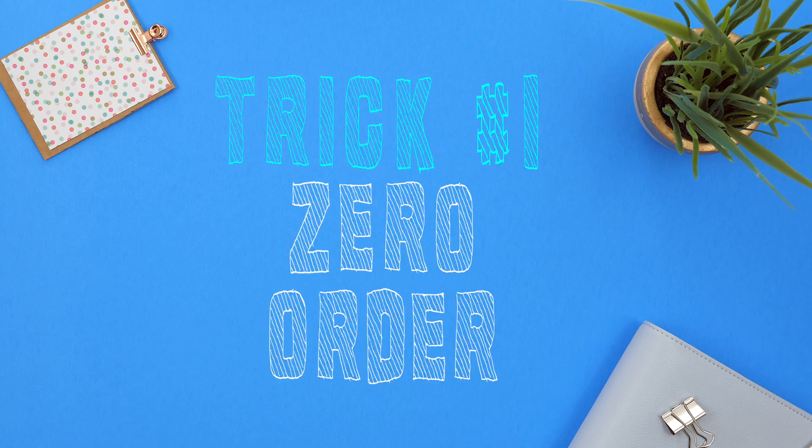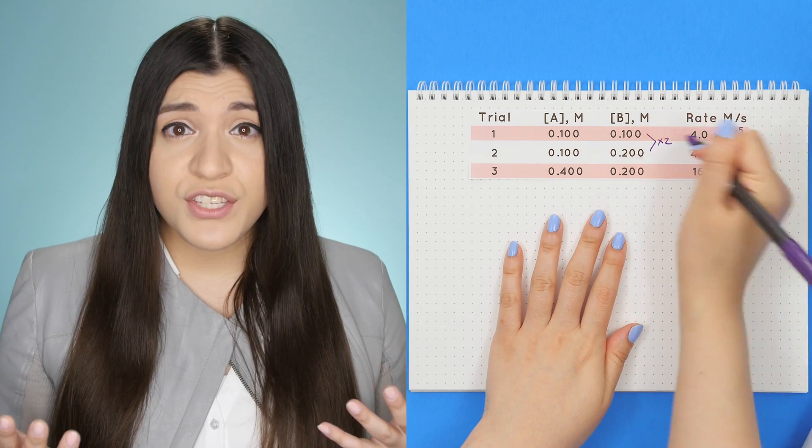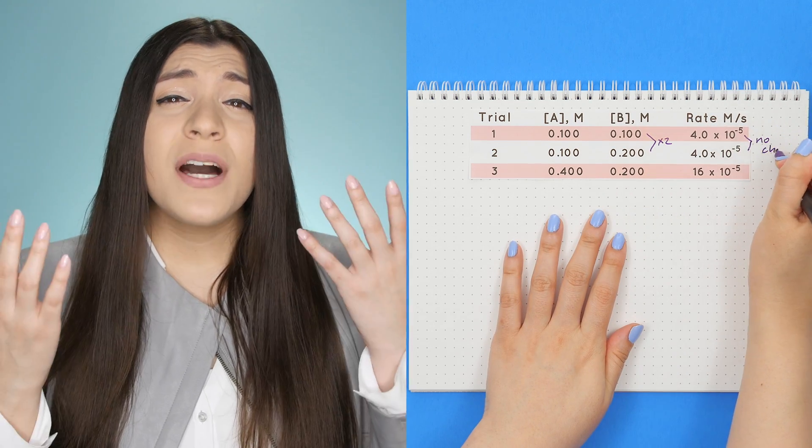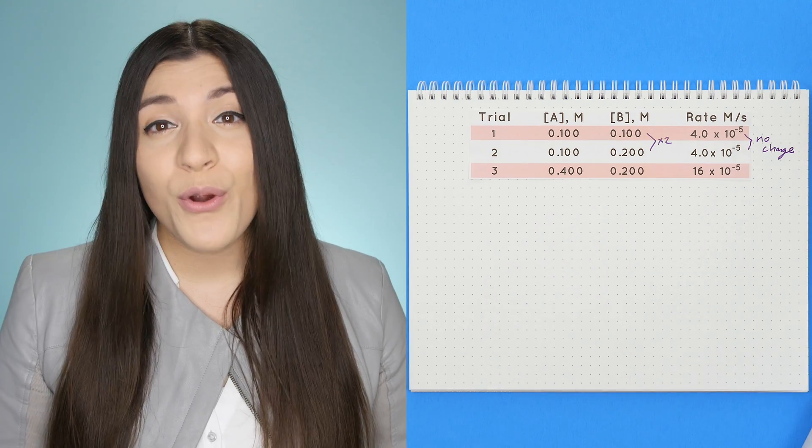Trick one, zero order. If you increase the concentration of the reactant but the rate does not change, then it's zero order.